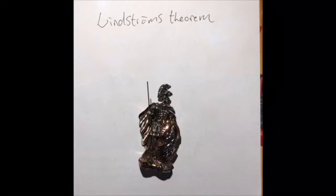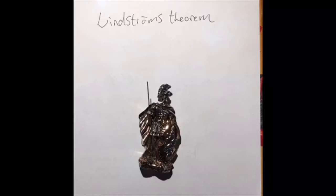So if L has the downward Löwenheim-Skolem property, then L has Löwenheim-Skolem number ℵ₀. The converse is not necessarily true — if a sentence phi has a countable model, it is not necessarily true that every model of phi has a countable substructure that models phi, as the downward Löwenheim-Skolem property asserts.